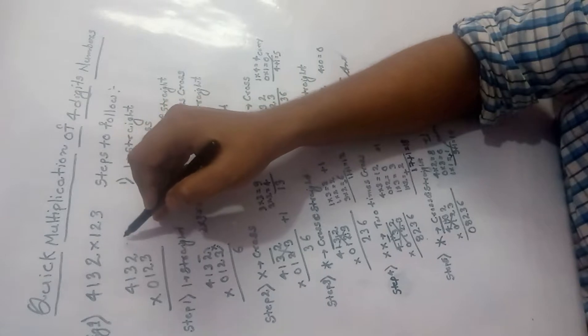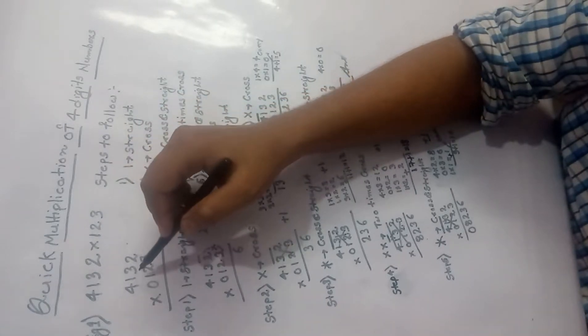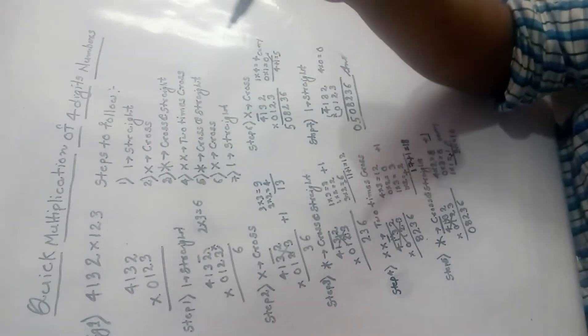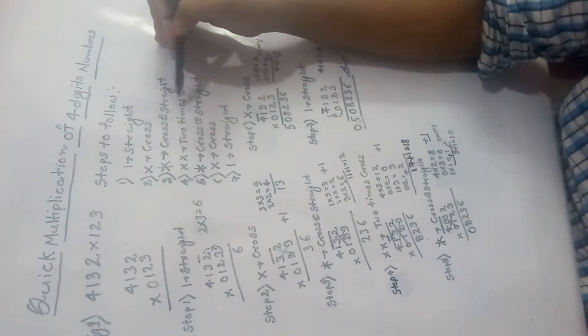So to make this number as a 4-digit number, I have put 0 in front so that we can multiply it easily. So before proceeding to multiplication, you have to follow these steps.